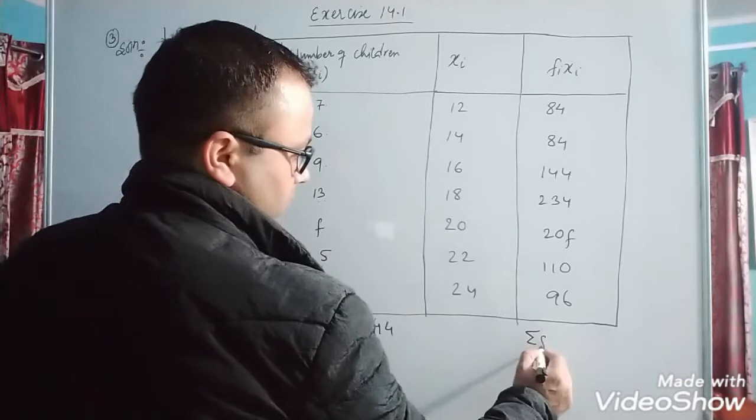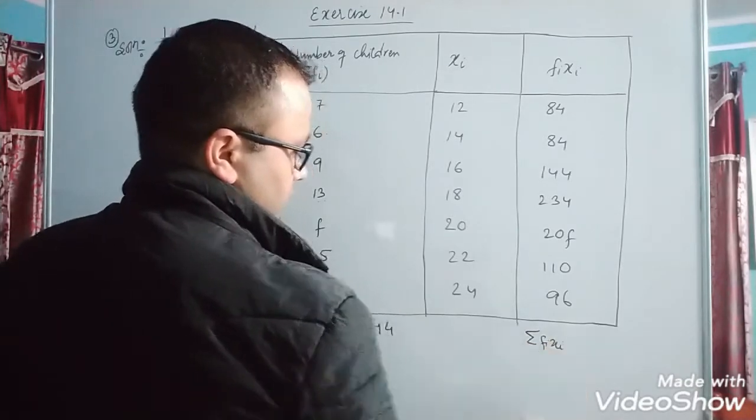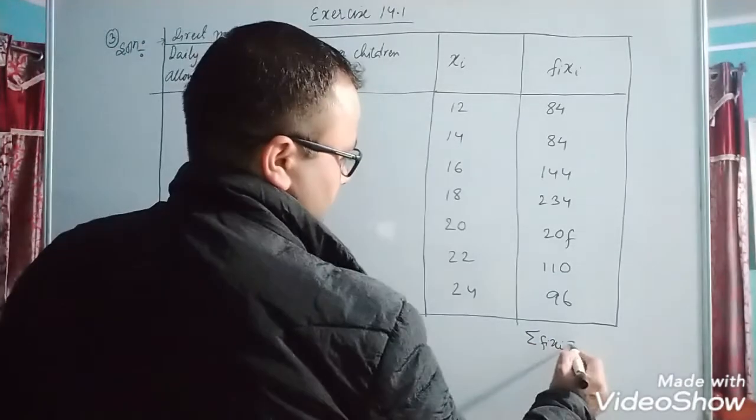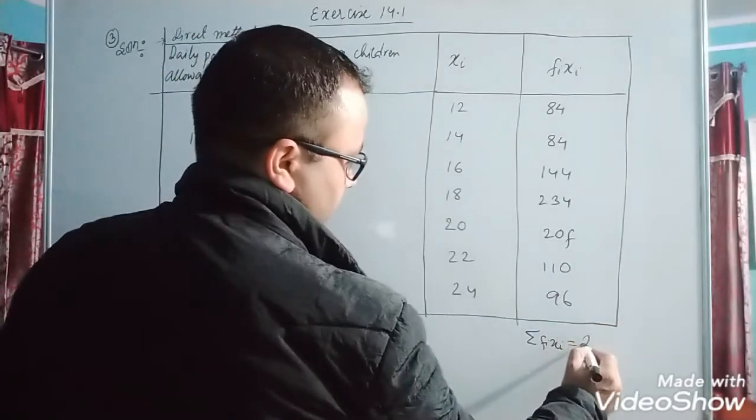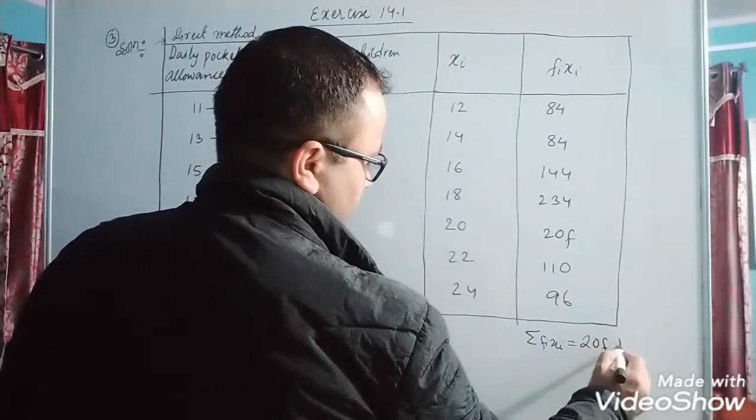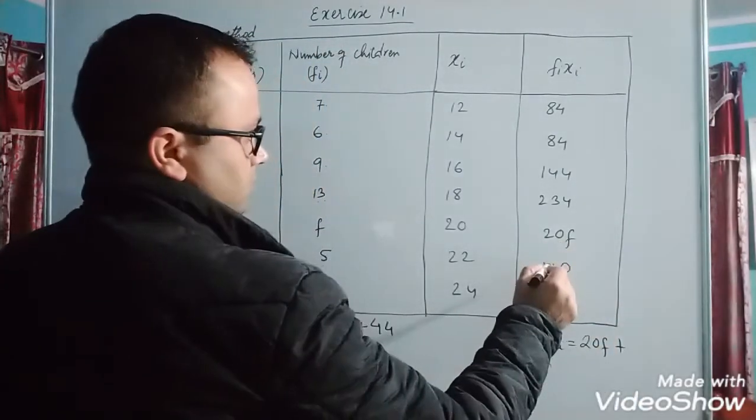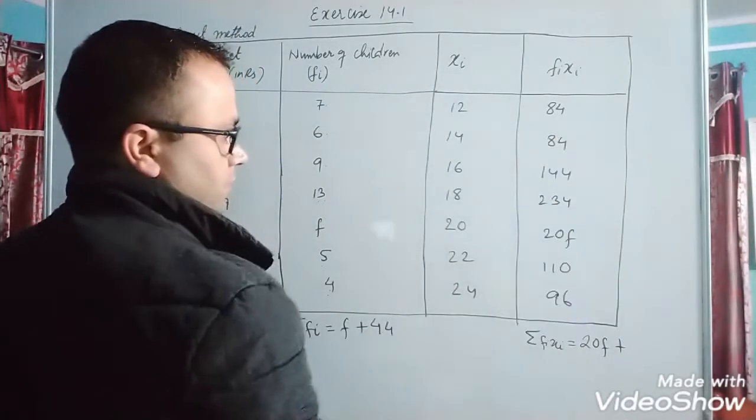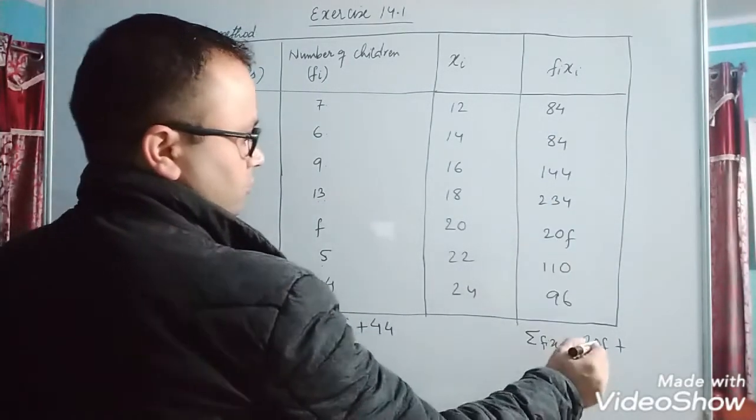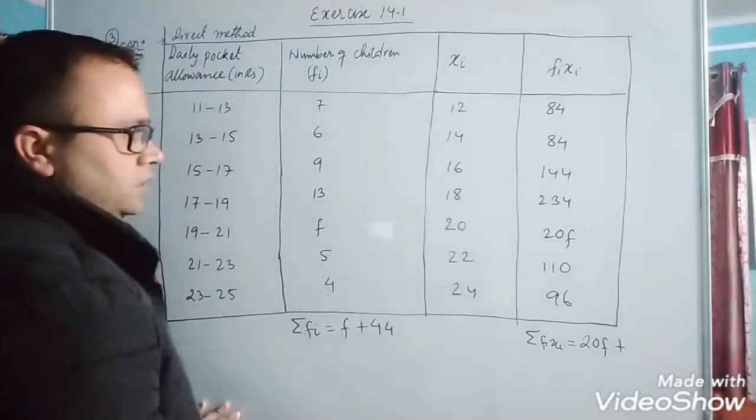Here, first we will take summation fi xi equal to, first we will take 20f, after that we have to add all the products except 20f. So 20f plus 84 plus 84 is 168.